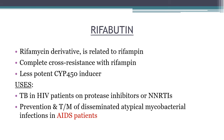Rifabutin is a rifamycin derivative related to rifampin, with complete cross-resistance between them. It is a less potent cytochrome P450 inducer than rifampin, resulting in fewer drug interactions. Its main clinical uses are: treatment of tuberculosis in HIV patients taking protease inhibitors or NNRTIs (where less CYP450 induction is desirable), and prevention and treatment of disseminated atypical mycobacterial infections in AIDS patients. In HIV-positive patients on antiretroviral therapy, rifabutin is preferred over rifampin.